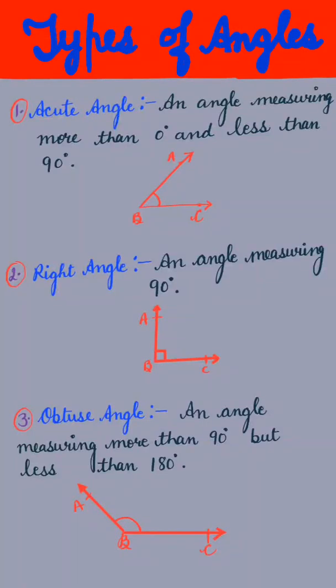Today we will study types of angles. The first one is acute angle: an angle measuring more than 0 degrees and less than 90 degrees is called an acute angle.